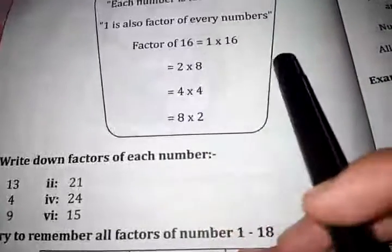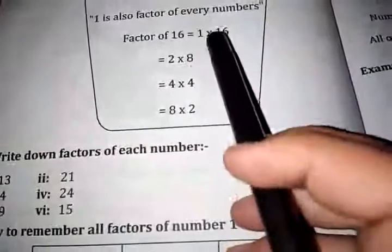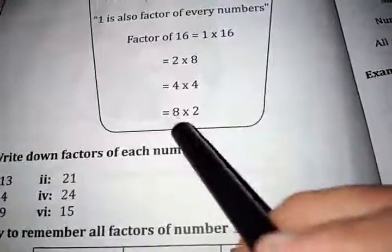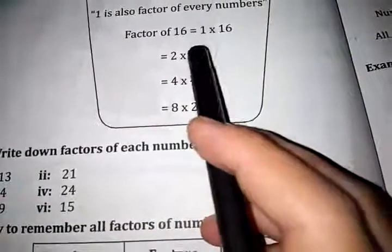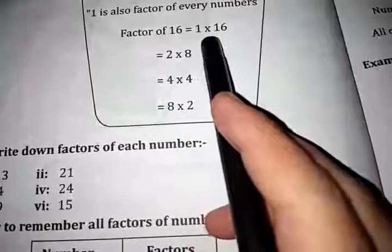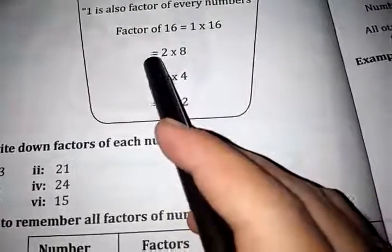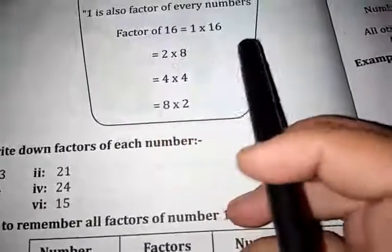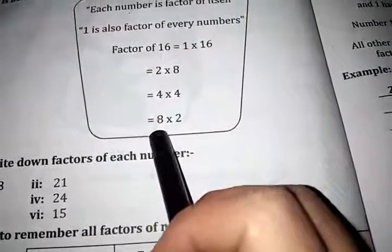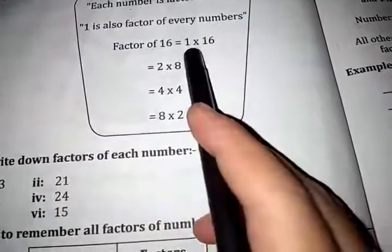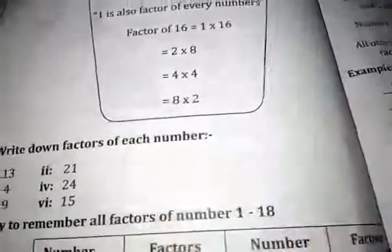Here we have an example. Factors of 16 are 1, 2, 4, and 8. We can divide 16 by 1, 2, 4, and 8 without any remainder, so they are all the factors of 16.